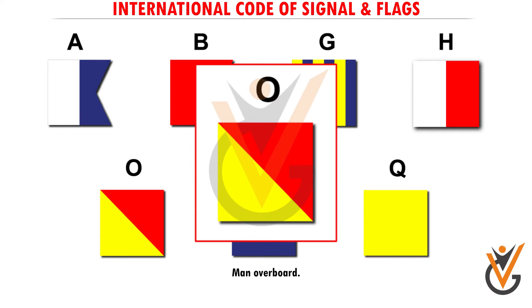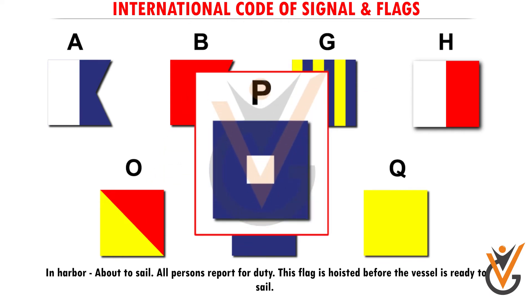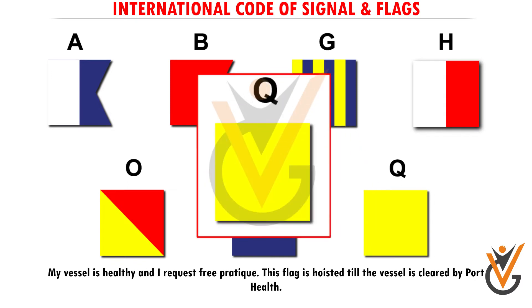Flag O — man overboard. Flag P — in harbor, about to sail; all persons report for duty. This flag is hoisted before the vessel is ready to sail. Flag Q — my vessel is healthy and I request free pratique. This flag is hoisted until the vessel is cleared by Port Health.